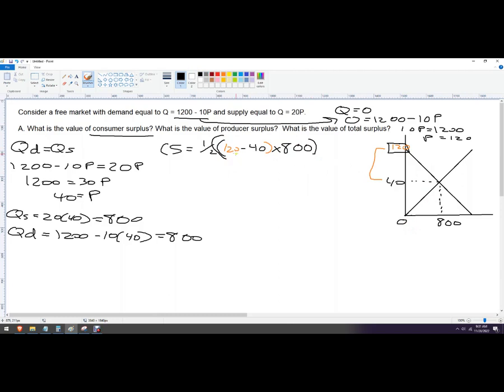So this is 80 times 800 and then one half of that. So let's get my calculator out here. 80 times 800 is 64,000. And then half of that is 32,000. So the consumer surplus answer here is 32,000. And that makes sense because this is the area of this triangle here.